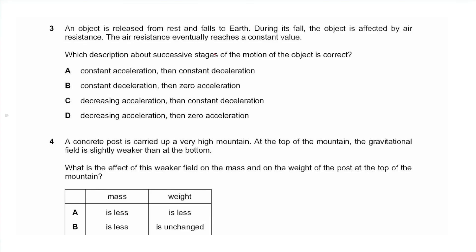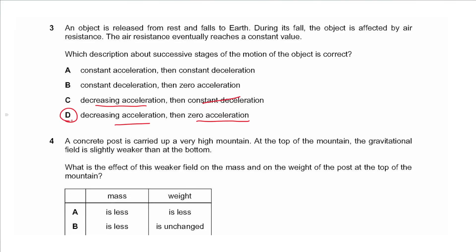Question 3 says an object is released from rest and falls to Earth. During its fall the object is affected by air resistance. The air resistance eventually reaches a constant value. As speed increases, air resistance increases, causing the resultant force and acceleration downwards to decrease until the air resistance balances the weight. Then the resultant force is zero and it moves at constant speed — terminal velocity. So we have decreasing acceleration then zero acceleration for constant speed, so we choose D.